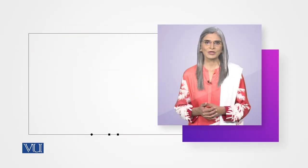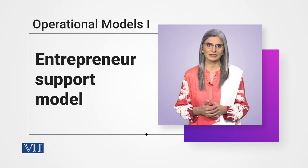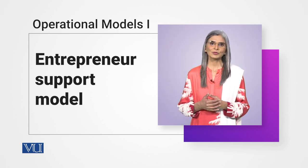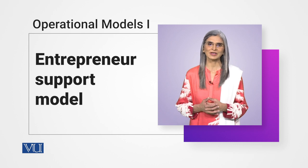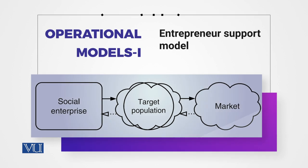The first model is the Entrepreneur Support Model. We will try to explain it on the screen. If you can see a figure on the screen, the image is very simple — this model explains the whole model. There are three elements: one is a social enterprise, one is a target population, and one is a market. Let's see how the mission and money relationship is translated.